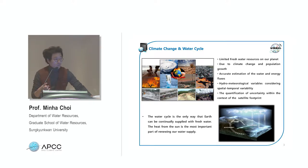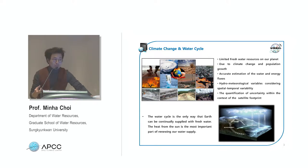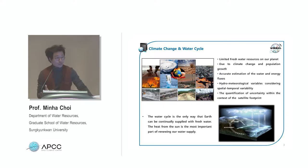Besides those, evapotranspiration and soil moisture tend to be less studied in hydrology, because field experiments are time-independent and isolated, making it hard to provide reliable estimates for large areas. Remote sensing techniques are one of the most promising approaches to provide aerial average values for hydrology stations.